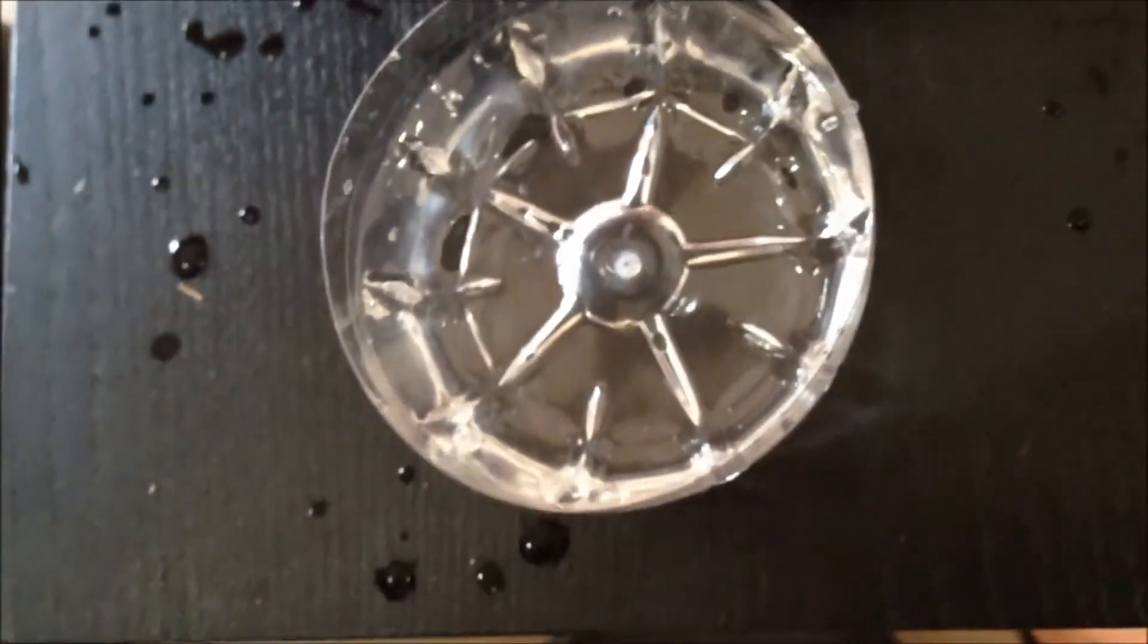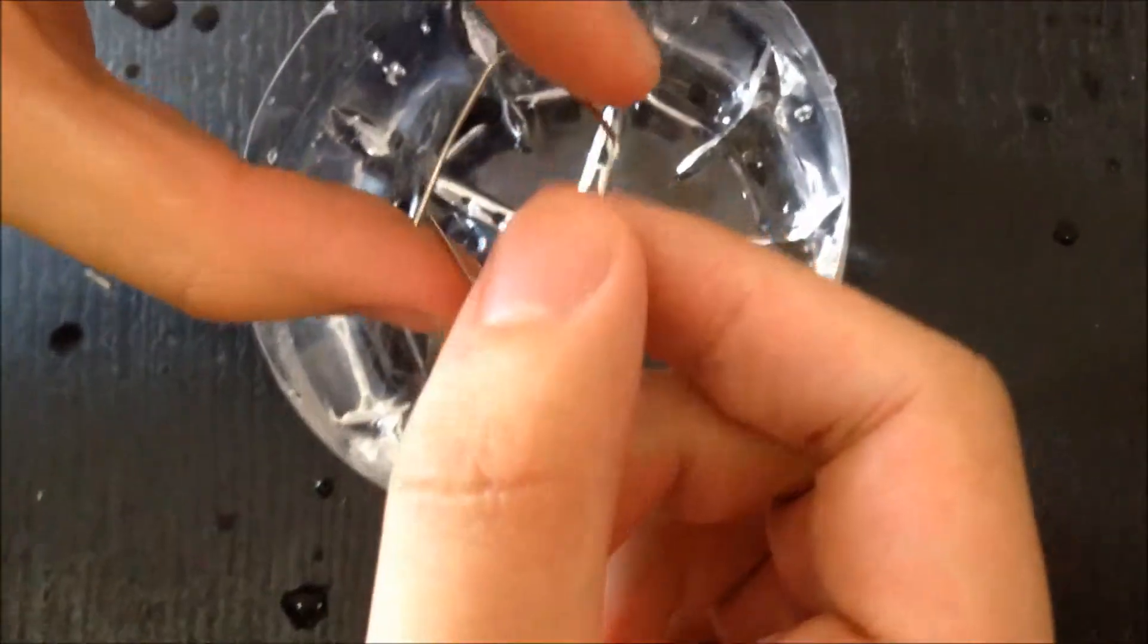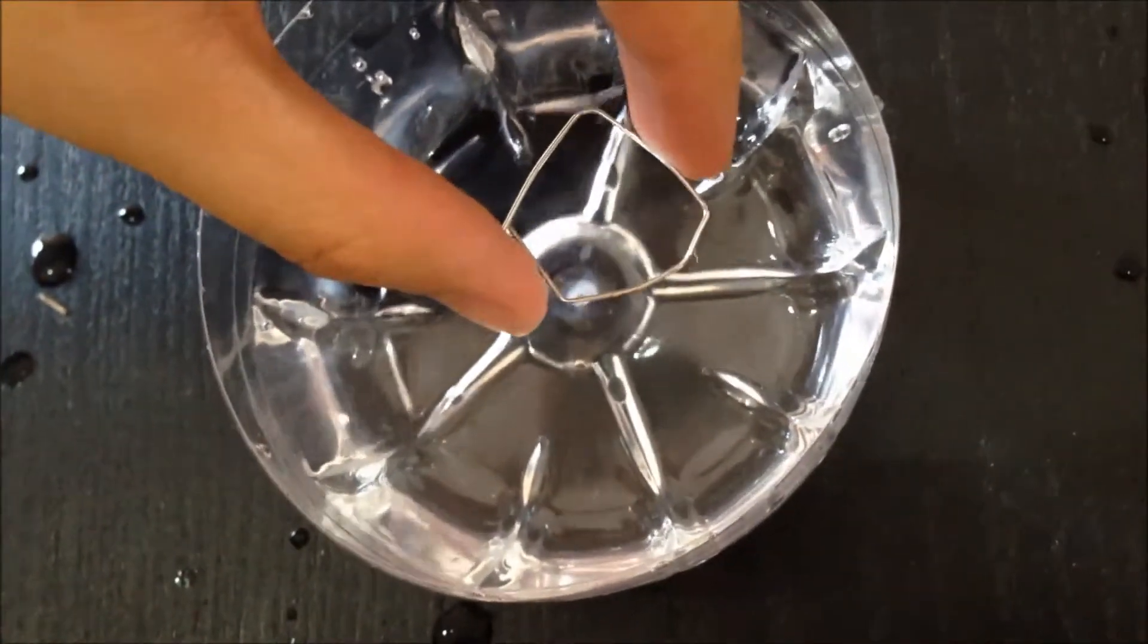We have water inside the beaker. A paper clip is made out of iron. Put it on the surface water very carefully. We can see the paper clip will float on the surface water even though it is more dense than water.